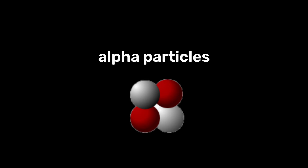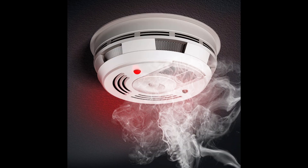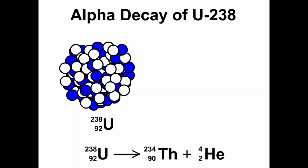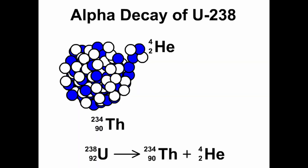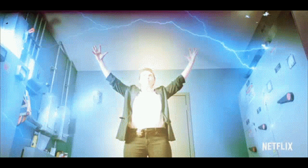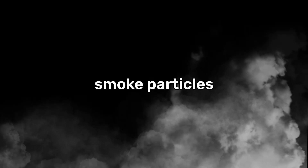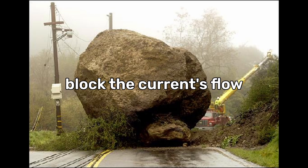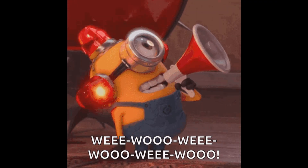One use of alpha particles is in smoke detectors. The emission of alpha particles generates a permanent current, and if smoke particles block the current's flow, the alarm goes off.